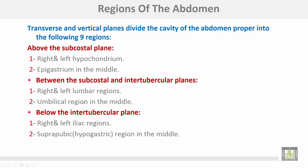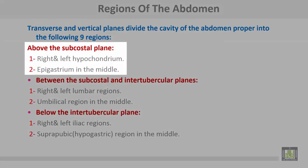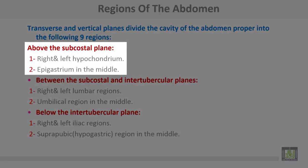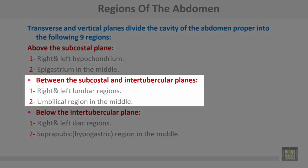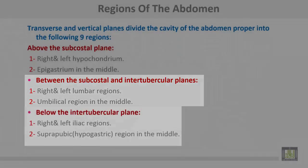The regions of the abdomen: transverse and vertical planes divide the cavity of the abdomen proper into nine regions. Above the subcostal plane: the right and left hypochondrium, and the epigastrium in the middle. Between the subcostal and intertubercular planes: the right and left lumbar regions, and the umbilical region in the middle.